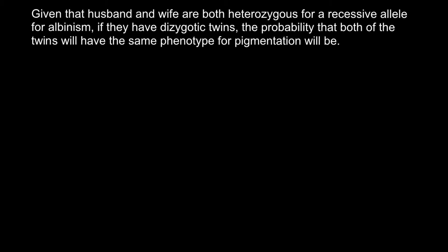Hello and welcome to Nikolai's genetics lessons. Today I have another problem from one of my subscribers. Given that a husband and wife are both heterozygous for a recessive allele for albinism, if they have dizygotic twins, the probability that both twins will have the same phenotype for pigmentation will be?